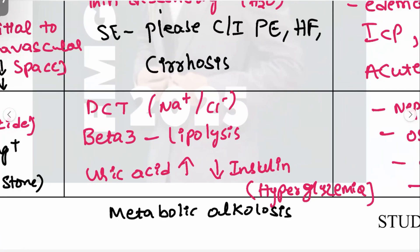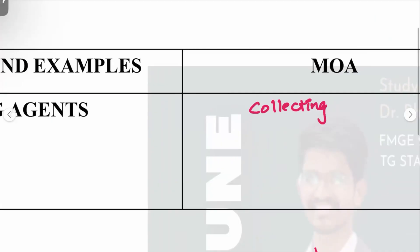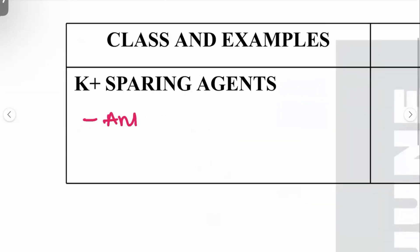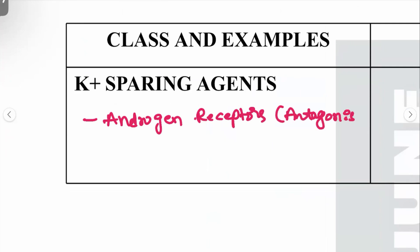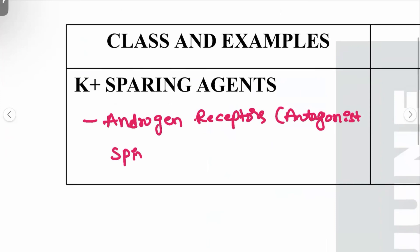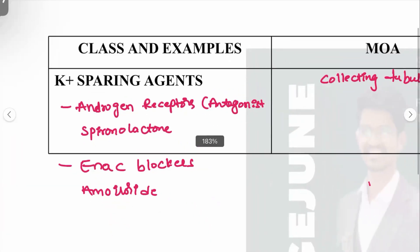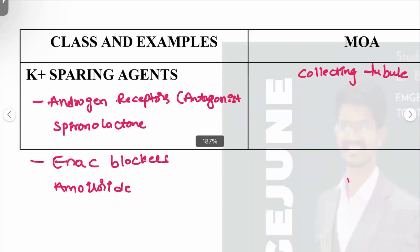Potassium-sparing diuretics act at the collecting duct. There are two types: aldosterone receptor antagonists — with spironolactone as the key drug — and epithelial sodium channel (ENaC) blockers, with amiloride as the key drug.